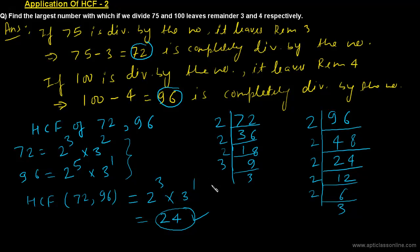The HCF of 72 and 96 comes out to be 24. That means 24 is the required number — with which if we divide 75 and 100, it will leave remainders 3 and 4 respectively. We will see more examples in the next class.